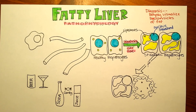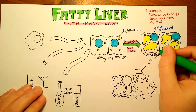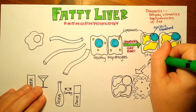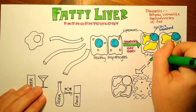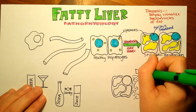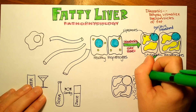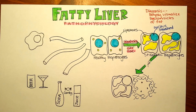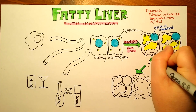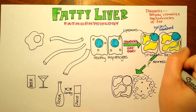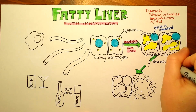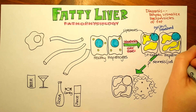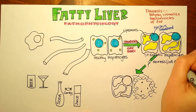We're not always sure what makes this change happen, but over time, and maybe some genetic predisposition and some other factors, some of the cells will start dying. When they die, sometimes we can get a lot of inflammation. We could call that necrosis — so cell death with inflammation.